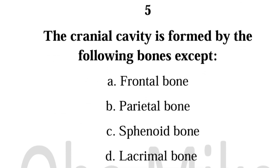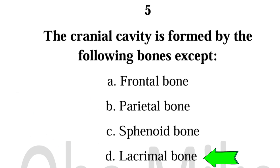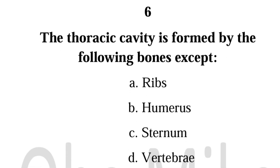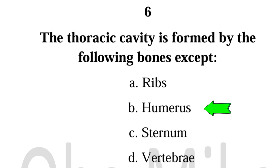Number 5. The cranial cavity is formed by the following bones except: Lacrimal bone. Number 6. The thoracic cavity is formed by the following bones except: Humerus.